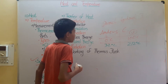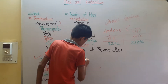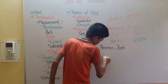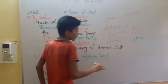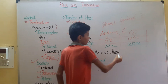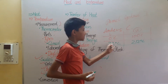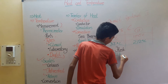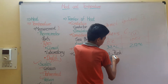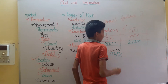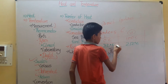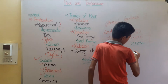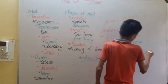The Kelvin scale was invented by Lord Kelvin. The lowest point of this scale is 273 Kelvin and the uppermost temperature is 373 Kelvin.